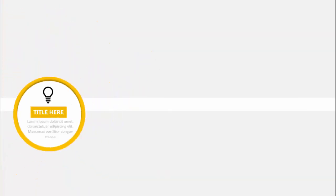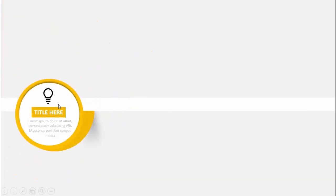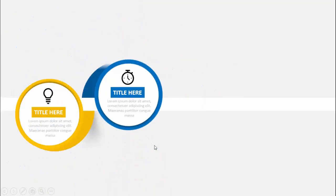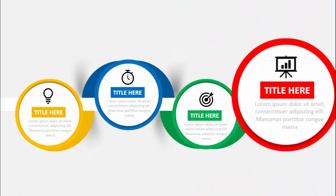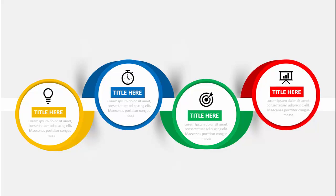In today's tutorial I'm going to show you how to create a four circular options infographic slide in PowerPoint. When I click you can see the first option comes with a circle icon and you can add the title and the detailed text. When I click the next option comes, then the third with a different color, and then the fourth.